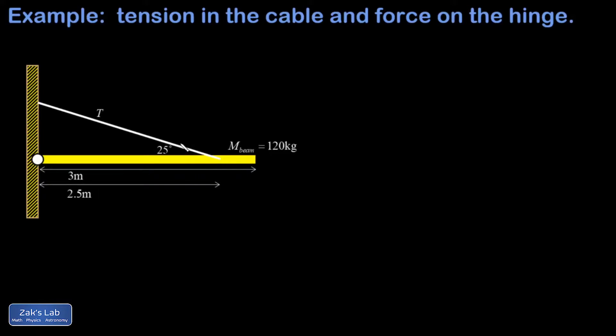In this problem we have a heavy beam suspended horizontally with a cable at one end, and the cable is not attached all the way to the very end. It's attached to a spot here two and a half meters from the left end, and then the beam is hooked up to a hinge at the left end. One of our questions is to find the tension in the cable, but another one of our questions is to find the force exerted by the hinge. Before I get started doing any of the math, I wanted to figure out qualitatively which way does that force point.